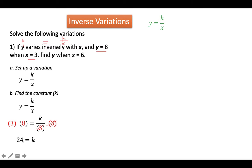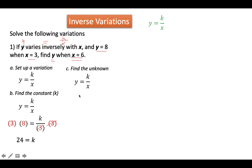Finally, we can find the unknown y given x is equal to 6. We use the same variation, replace k with 24 and x with 6, then solve the equation: 24 divided by 6 is 4. And that is the value of our unknown.